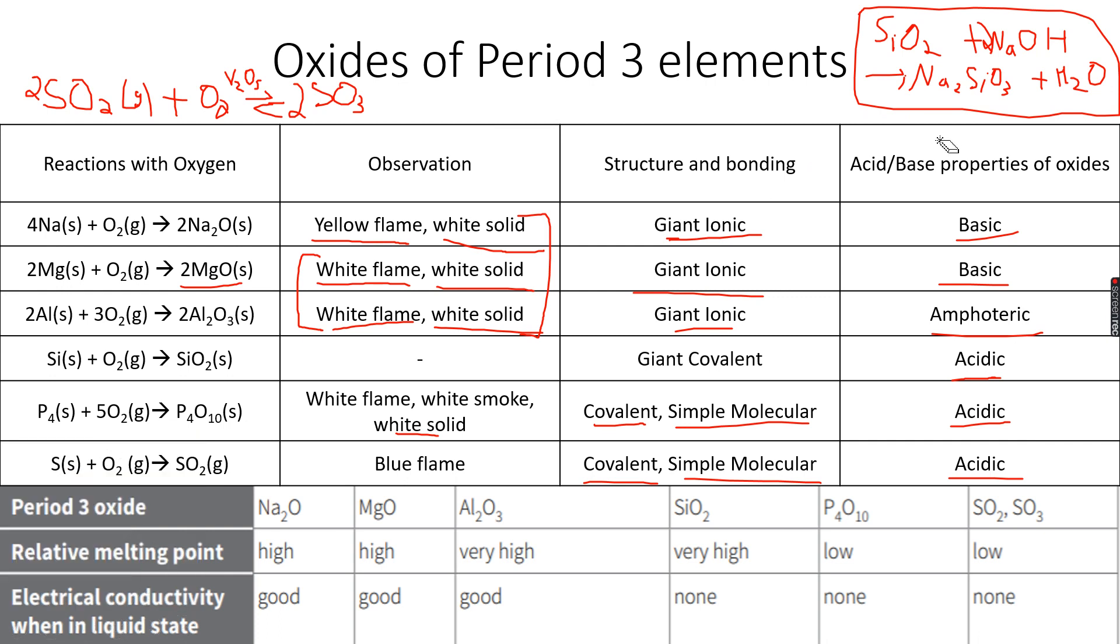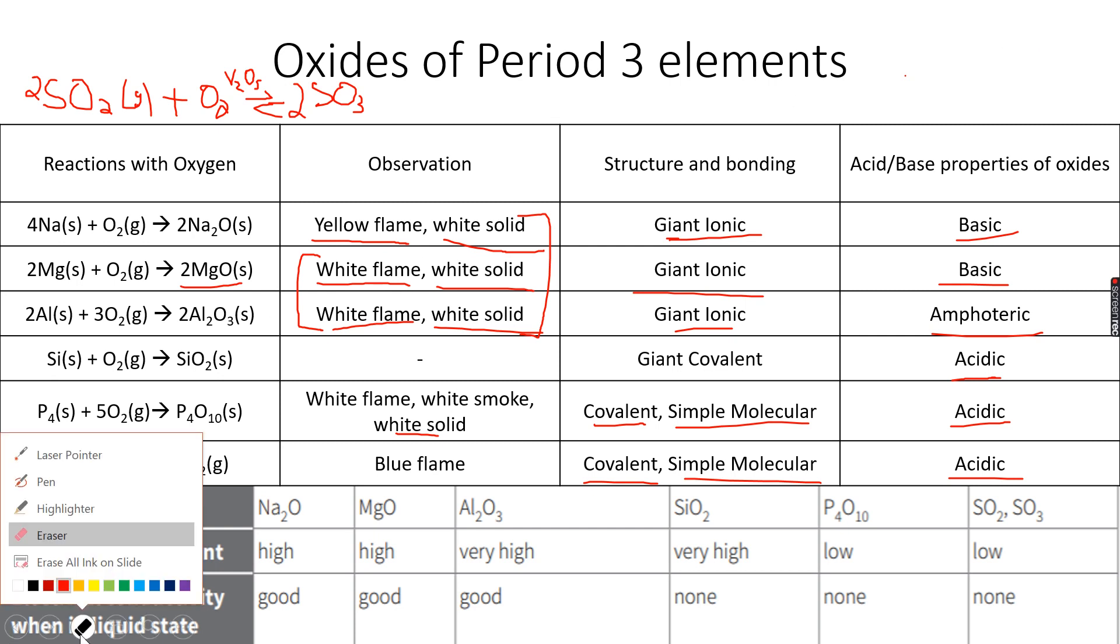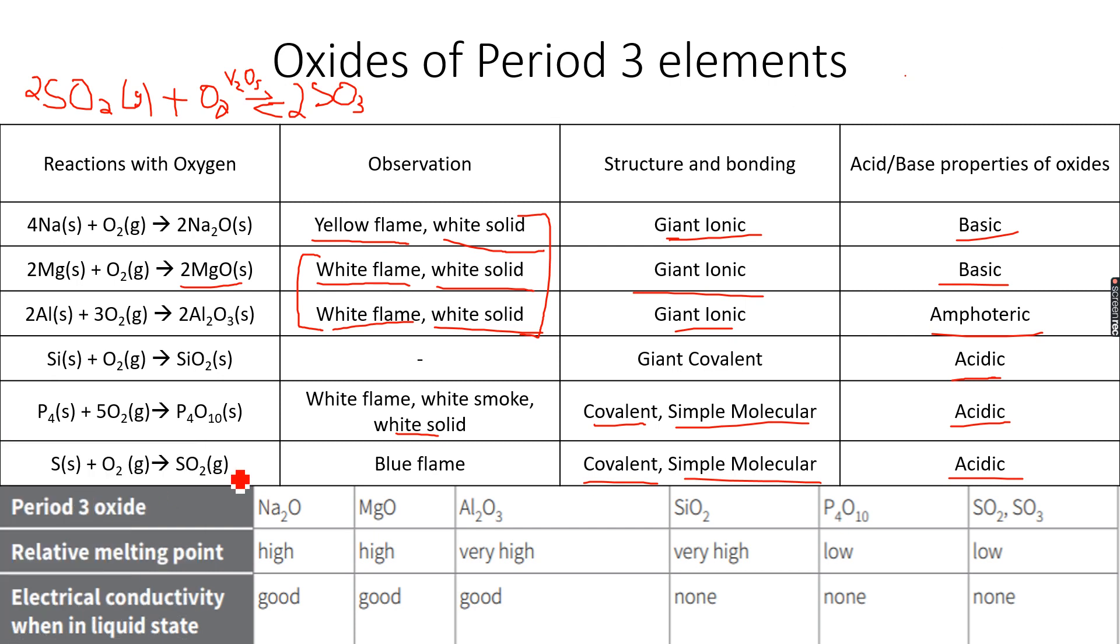Then we come to P4O10. P4O10 is also acidic. To show the acidic properties of P4O10, when we add P4O10 to water, we get phosphoric acid. So you can see this is P4O10 reacting with water.